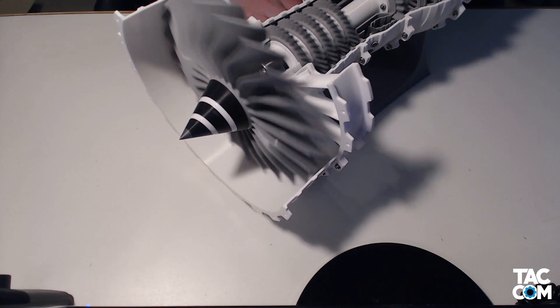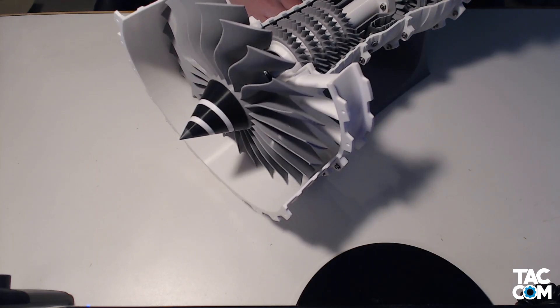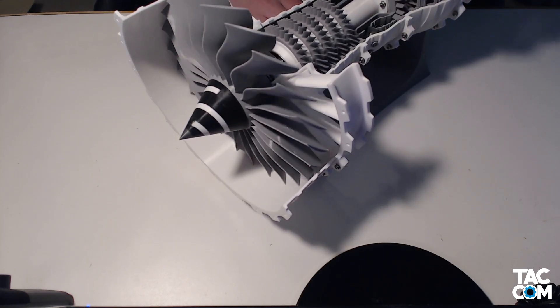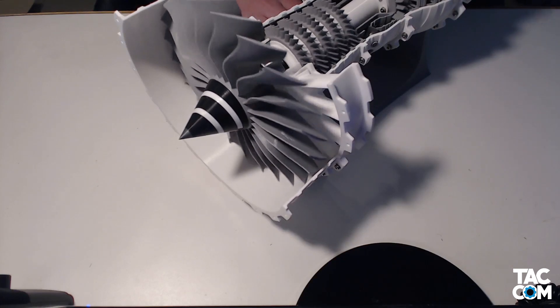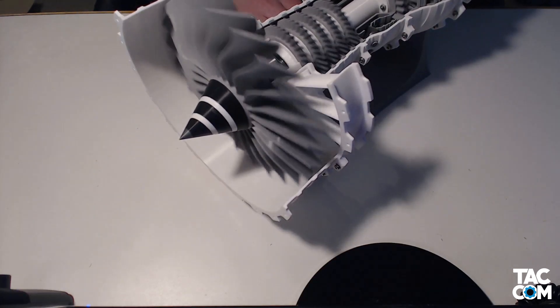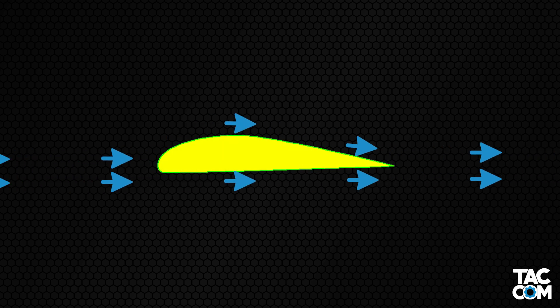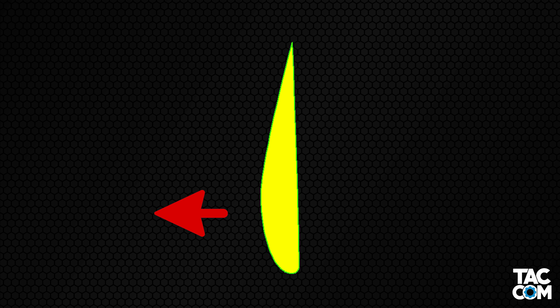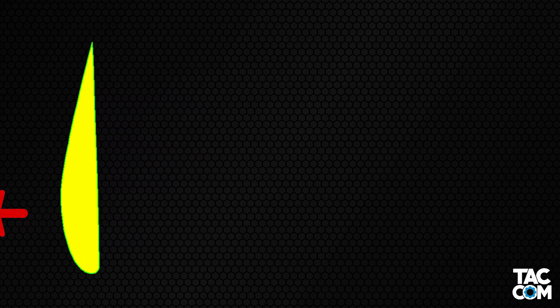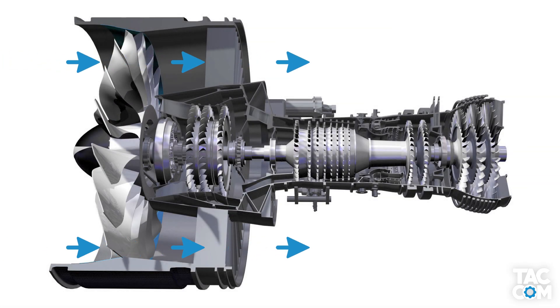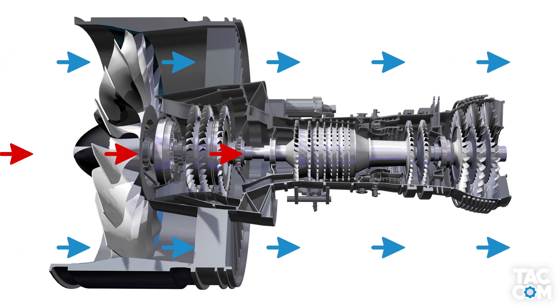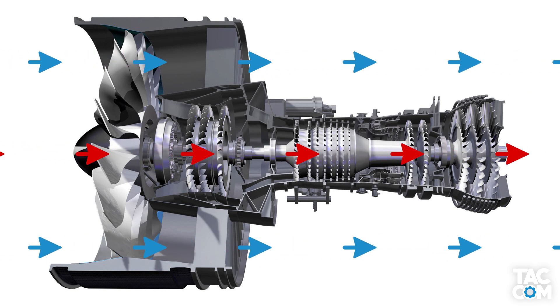Let's hop back to the front of the engine and start with the fan. On most high bypass turbofan engines, the fan actually produces a bulk of the thrust. It slightly compresses the air, but more importantly, the angle of the airfoils creates lift — not lift as most people think of it as 'up,' but the angle makes it so that the lift points forward, thus generating thrust. Depending on the bypass ratio, a large portion of the air is then sent back out to ambient, while the rest is brought down into the core.